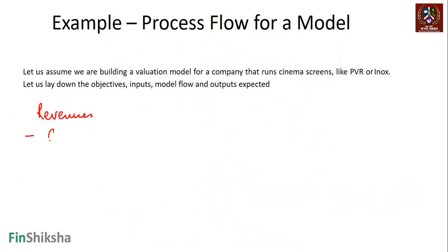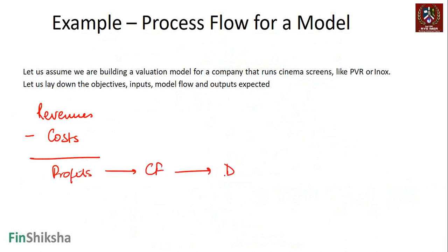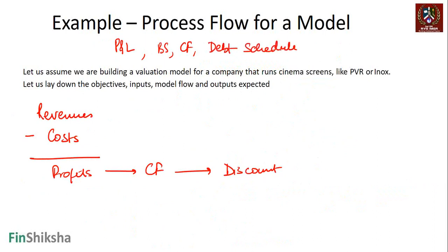Revenues minus the costs of running this gives us the profits. From profits, we have to try and find the cash flow. From cash flow, we have to discount the cash flow to arrive at the price. That's the flow. So you will typically have a P&L sheet, you will have a balance sheet, you will have a cash flow sheet. You can create a sheet for any other balance sheet projections - for example, if the company has debt, you can create a debt schedule. If you have capacity expansion plans, you can create a capex schedule.